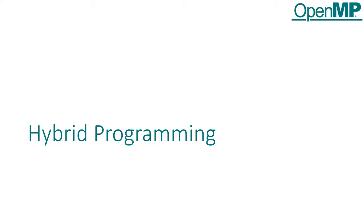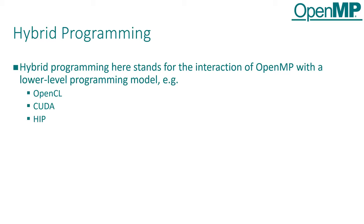Michael takes over to discuss hybrid programming. This is not like MPI plus OpenMP — it's really about using another language, a low-level language in this specific example, for GPU programming and how that interacts with the OpenMP API. For instance, using HIP — this will be the main example going forward, but it also works with CUDA, OpenCL, SYCL, and potentially other low-level programming languages — as well as library invocations like calling BLAS routines supplied by HIP Blast or ROCm Blast libraries.